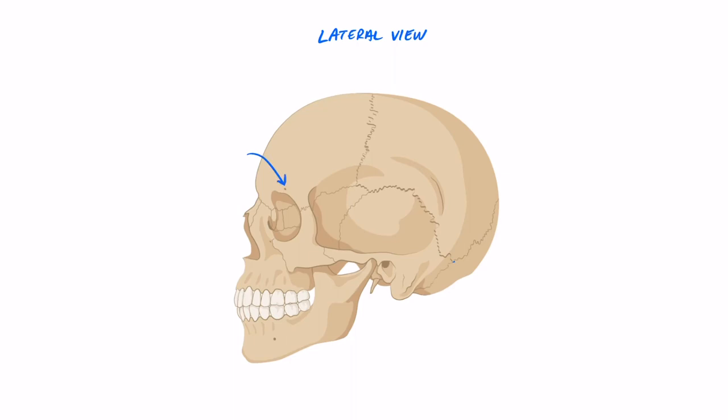From this view we can also see the three foramina that we went over in the previous video, and so above and below the orbit we'd find the supra and infraorbital foramina, and also the mental foramen in the region of the cheek.